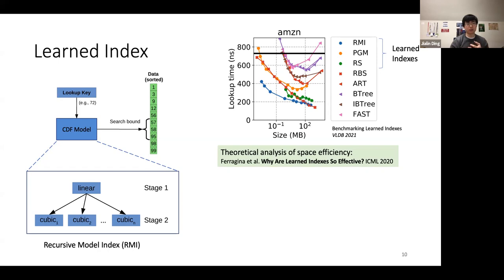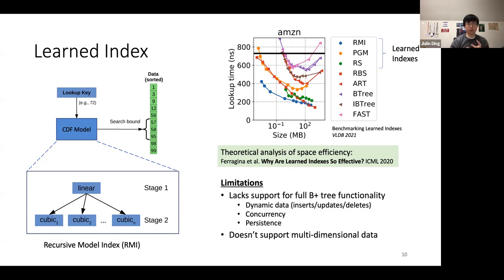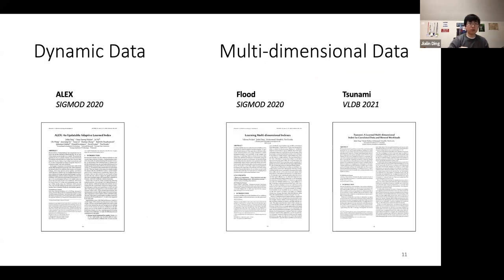Last year at ICML, a paper showed theoretically that given certain assumptions, learned indexes can be proven to be more space-efficient than traditional indexes like the B-tree. However, this first wave of learned index designs generally lacks support for full B+ tree functionality: they could support read operations like lookups, but didn't support dynamic data like inserts, updates, or deletes, didn't support concurrency, were designed for in-memory data only, and didn't support multi-dimensional data — a big use case in analytics.